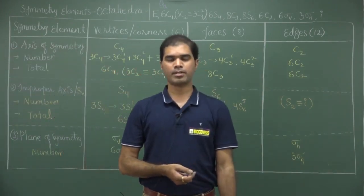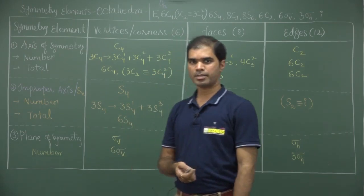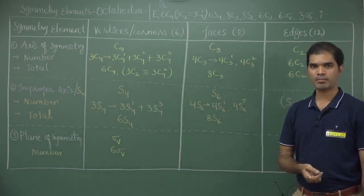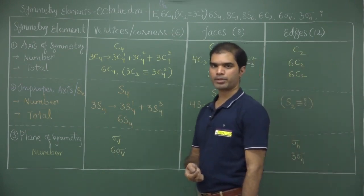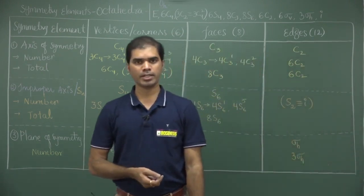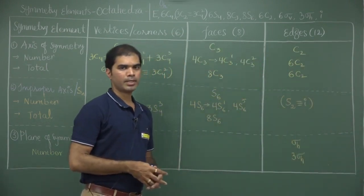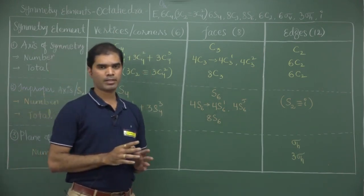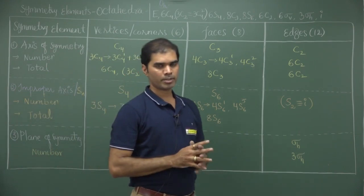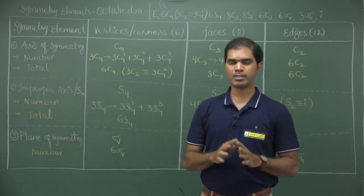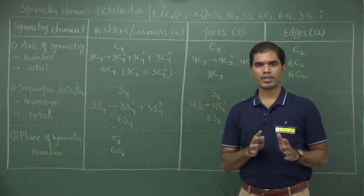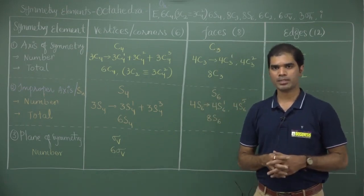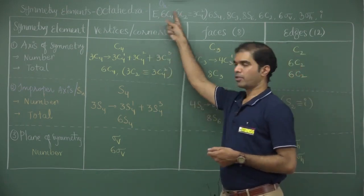Hello everyone and welcome to Dr. Rajesh Biogenesis. This video will explain the symmetry elements present in the Oh point group. The polyhedron chosen is the octahedron, and for this octahedron, there are 48 symmetry elements in variety. If you compare it with tetrahedra or icosahedra, you find different symmetry elements.